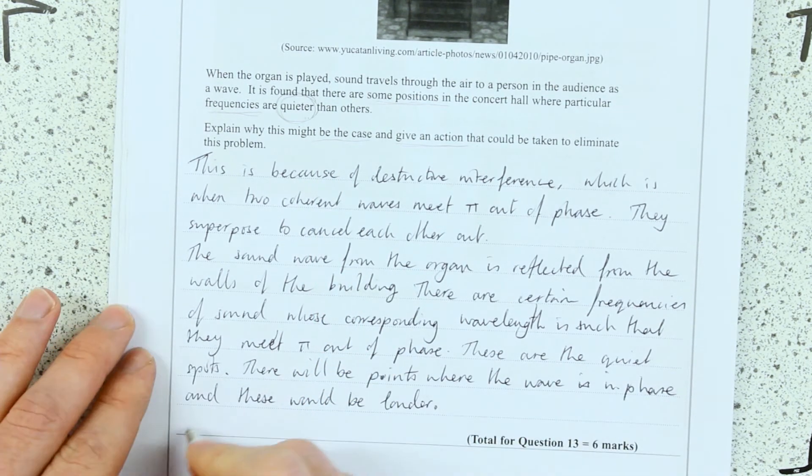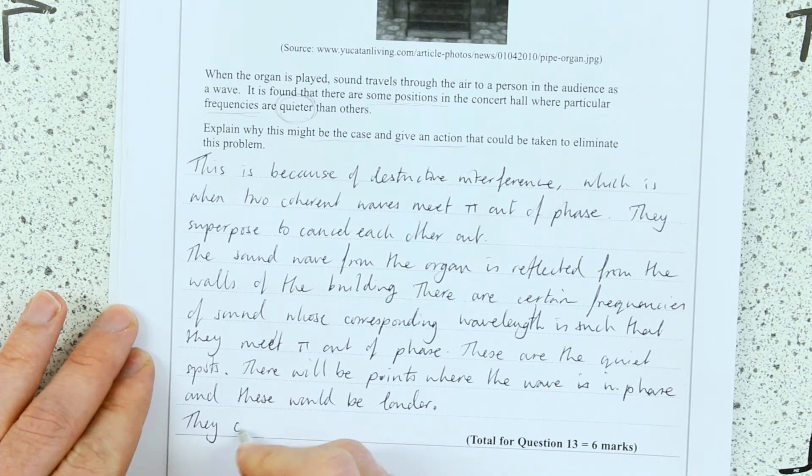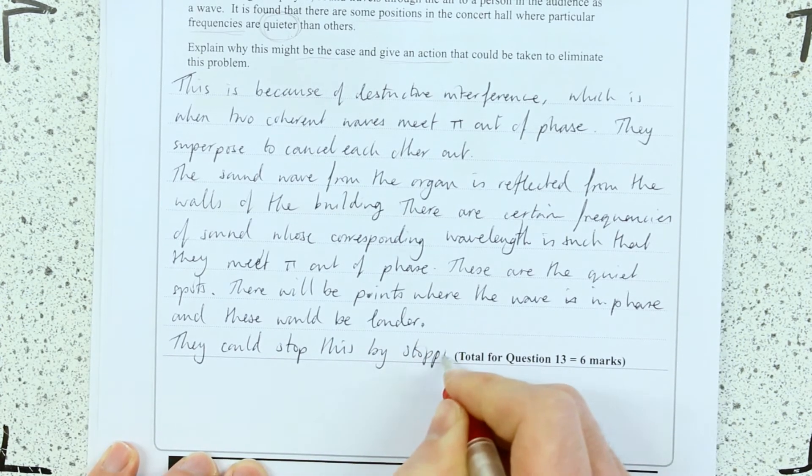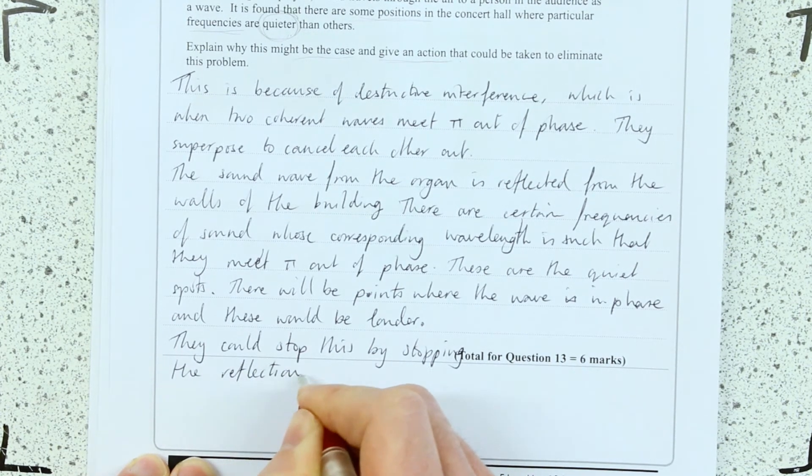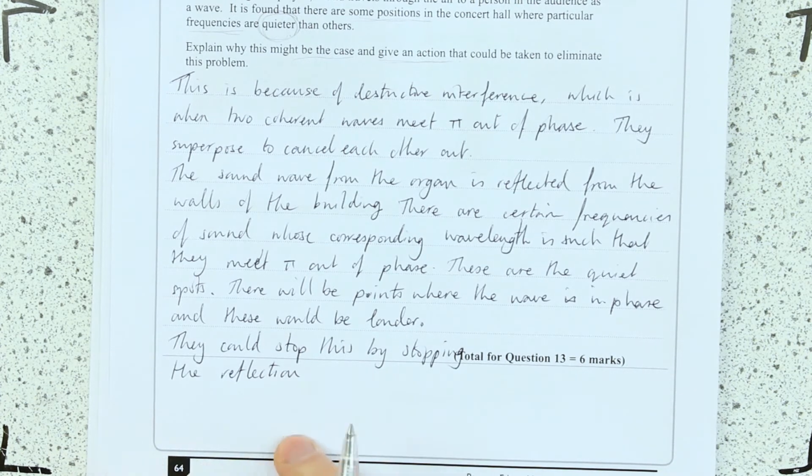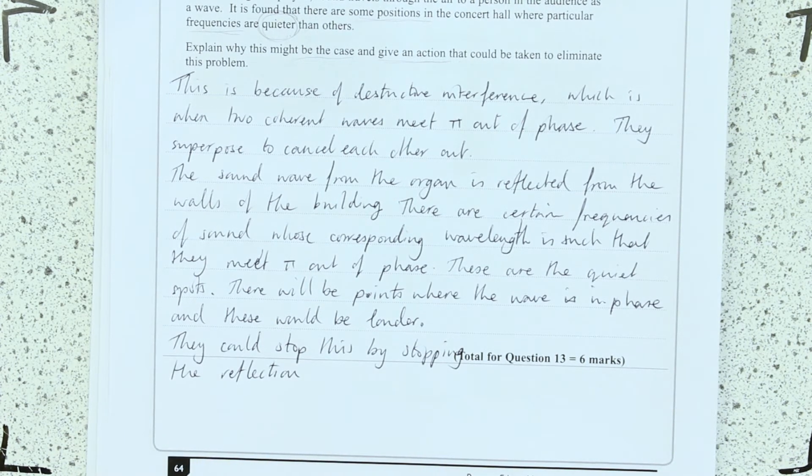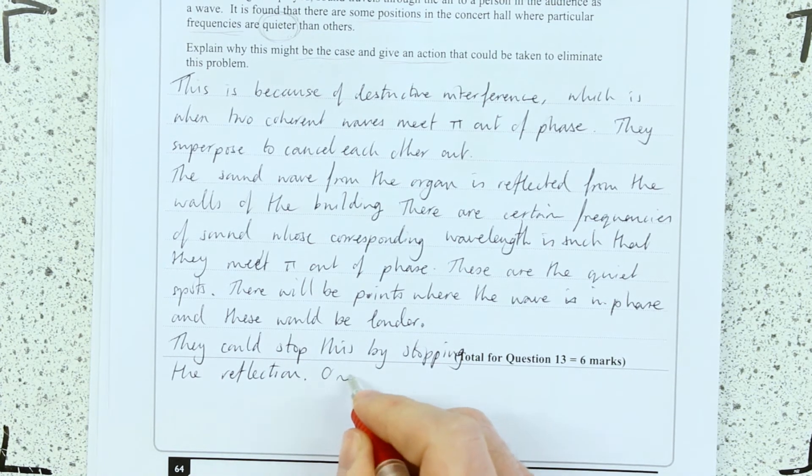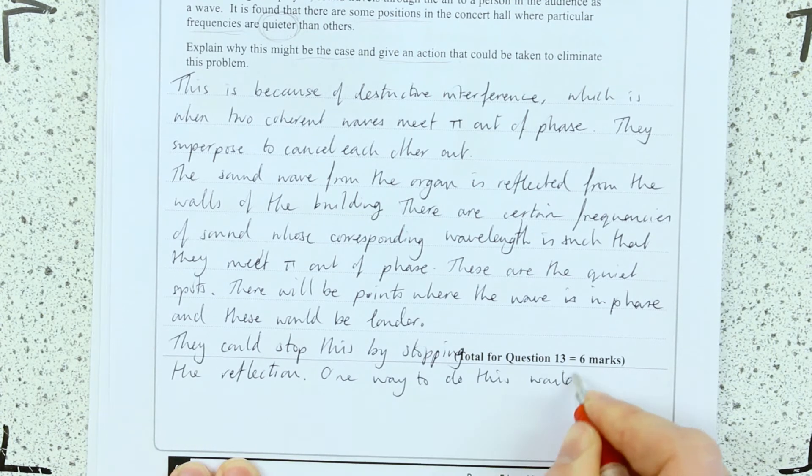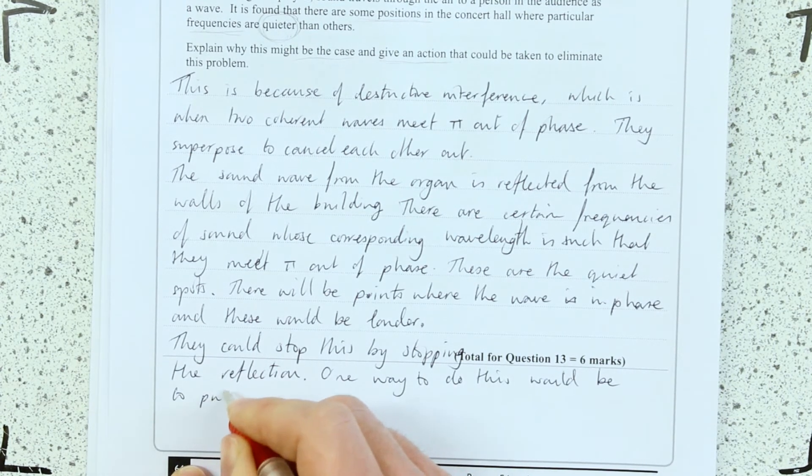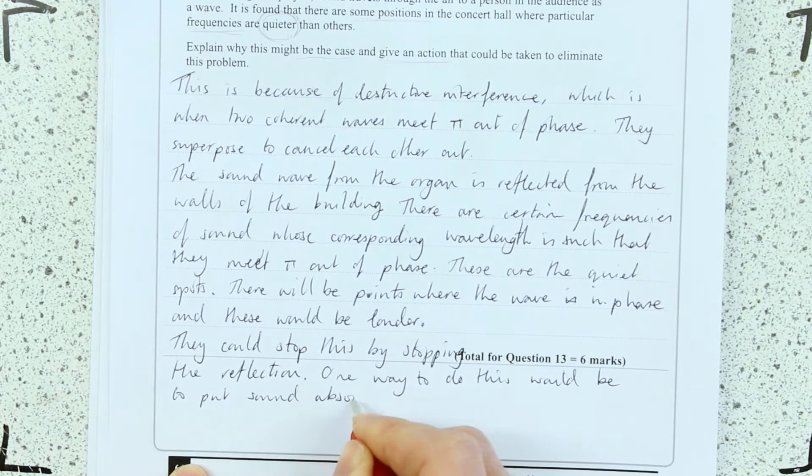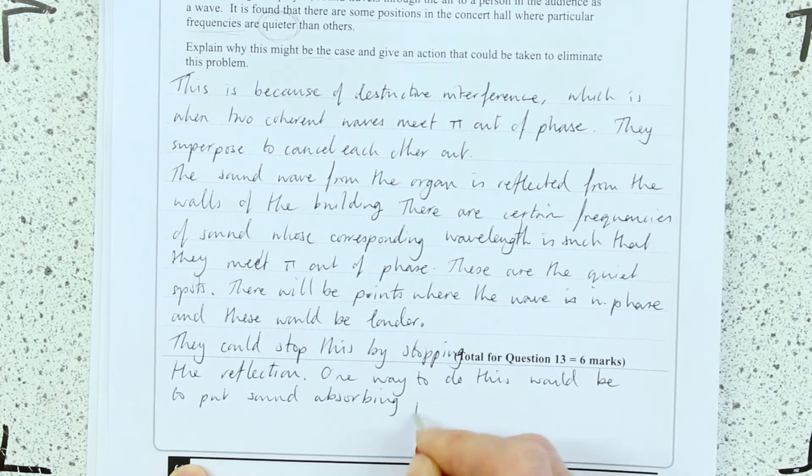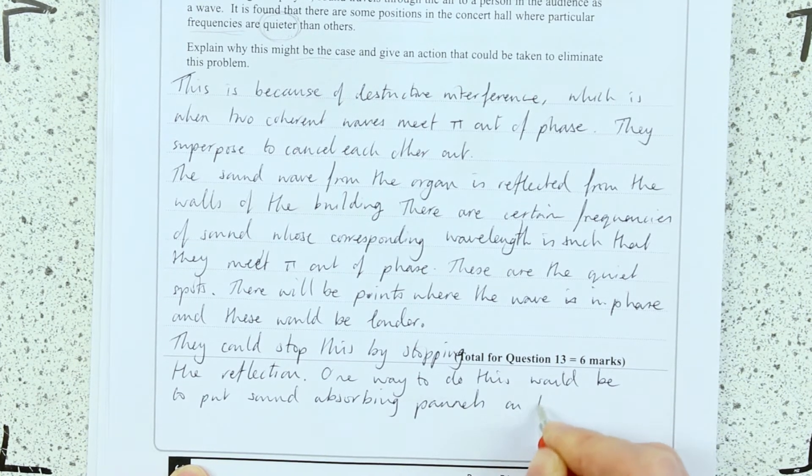How are they going to stop the reflection? They could stop this by stopping the reflection. I think I'm okay to carry on underneath here. It's just outside of this box I don't want to write in. I can stop this by stopping the reflection. One way to do this would be to put sound absorbing panels on the walls.